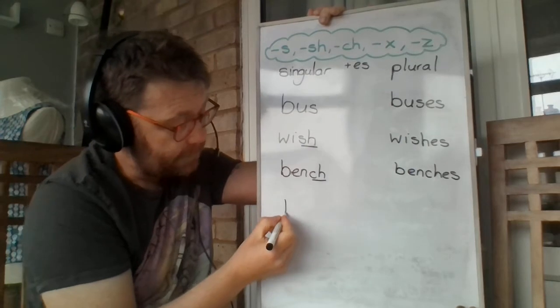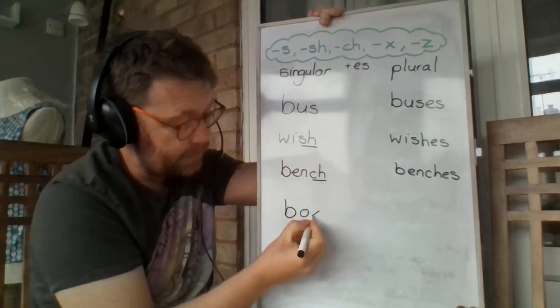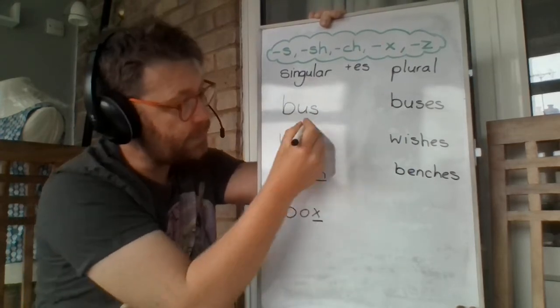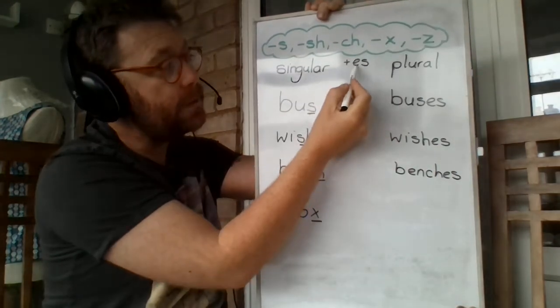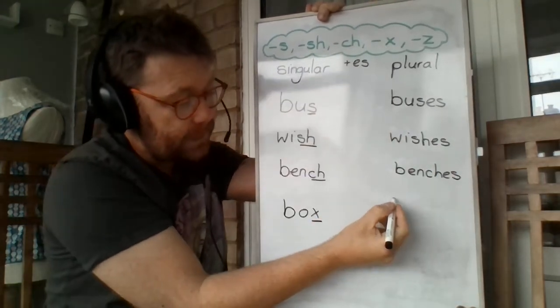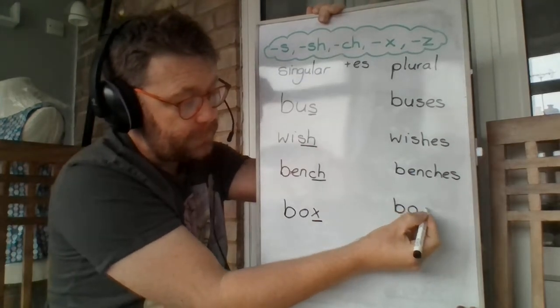Another one. I have got a box. Look, it ends with a X here, which is up in our cloud. So we have to add ES. Well, I have got lots of boxes.